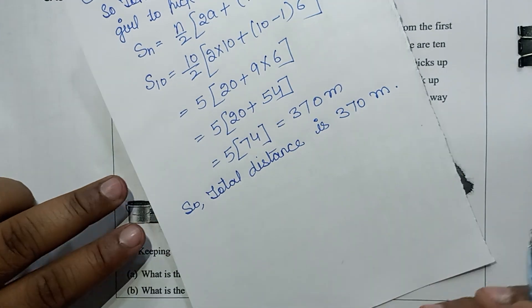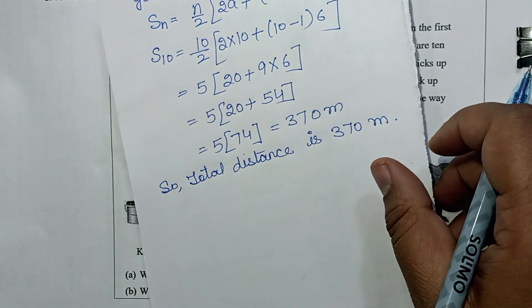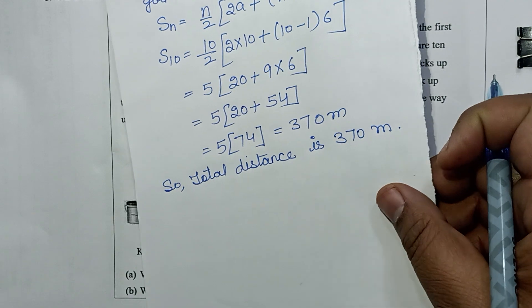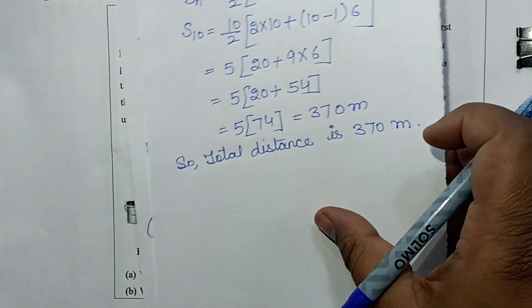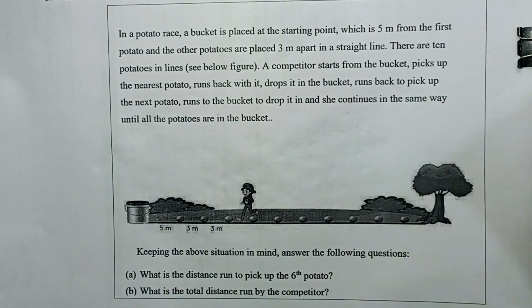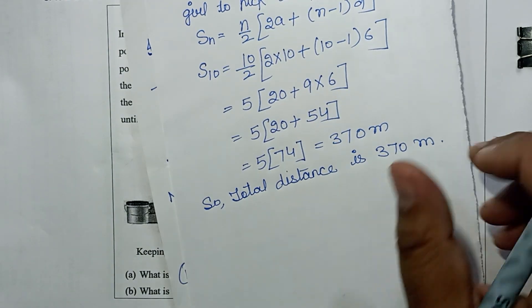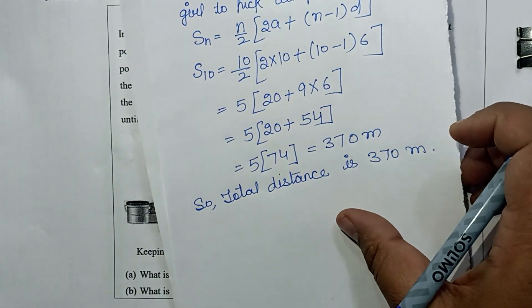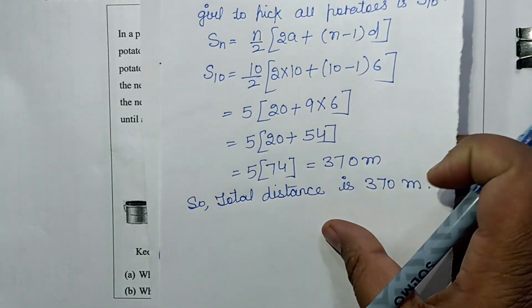So the total distance is 370 meters. Students, this is how we solve this question. I think everyone understood it well. It was a simple and interesting question. Many students make a mistake here — they do not double the distance traveled. Keep that in mind.